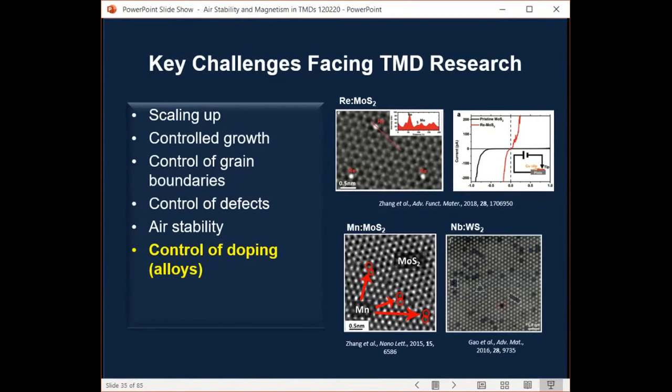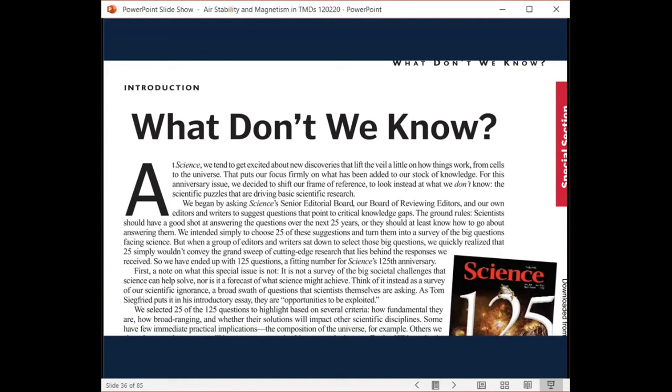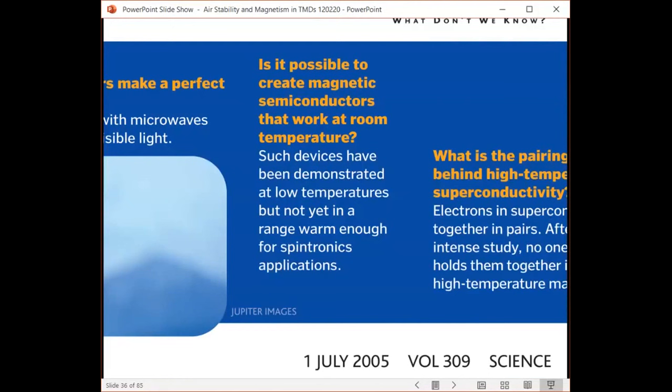Now let me move on to the topic of 2D magnets. Recent couple of years, we have worked on doping of transition atoms into TMDs, including molybdenum disulfide, tungsten sulfide and molybdenum diselenide. And it turned out that the doping of TMDs is crucial for creating 2D magnets. So that was our kind of starting point there. Journal Science suggested questions that point to critical knowledge gaps. The ground rules were such that scientists should have a good shot at answering the questions over the next 25 years. And they ended up creating 125 questions matching number for 125th anniversary of Science. And one of those 125 questions was about magnetic semiconductor working at room temperature. And pointing out that to read temperatures of those materials must be high enough for practical applications.